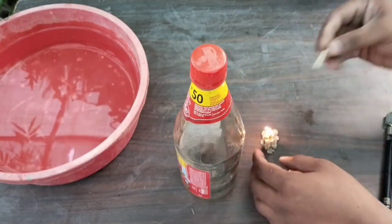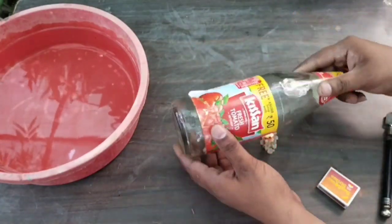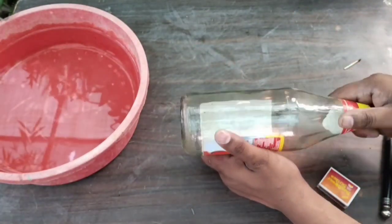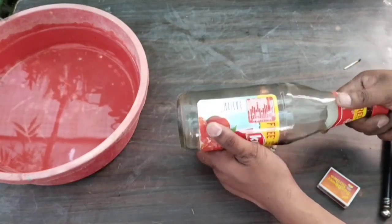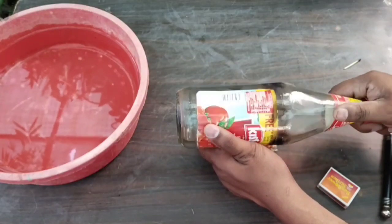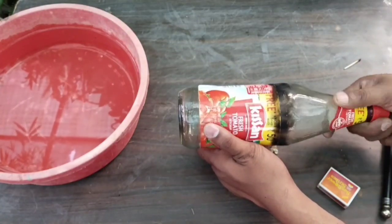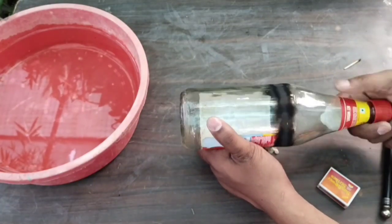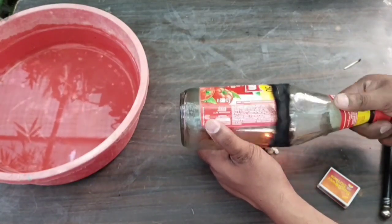Here we have lit the candle which will heat the marking part of the bottle. The bottle has to be rotated in such a way over the candle. This process will take one to two minutes.